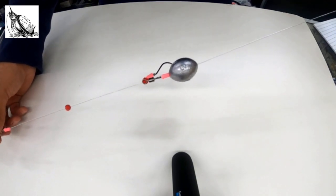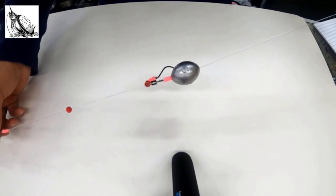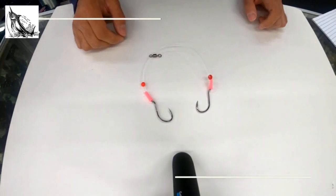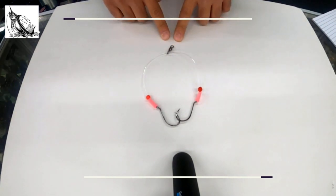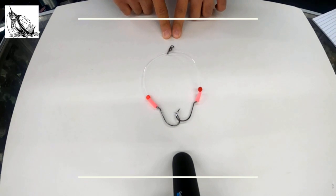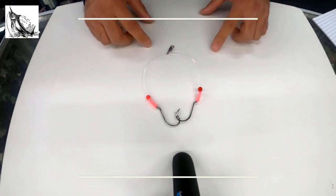The way our rigs will be sold is just like so. The egg sinker and your main leader will not be included. That's going to be up to you to attach your main leader to the swivel here. Before you do so, make sure you put your egg sinker in first.